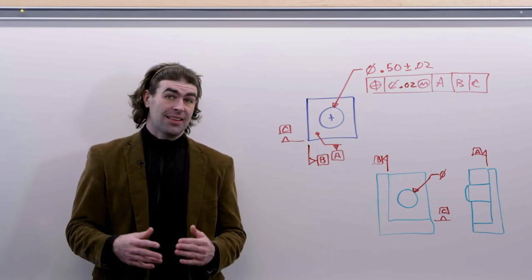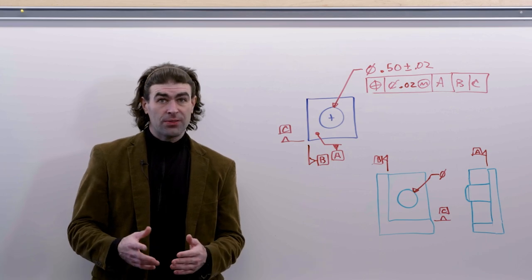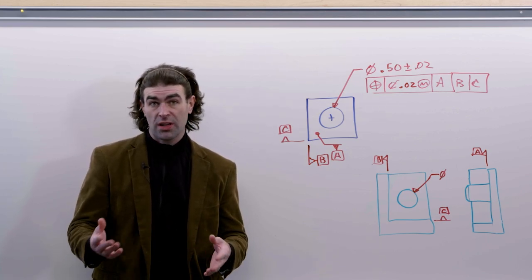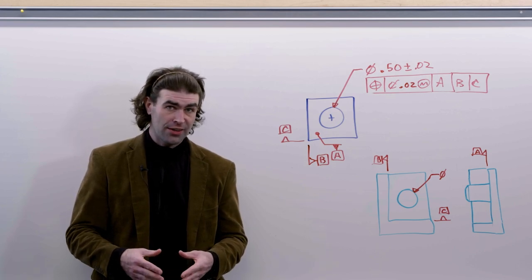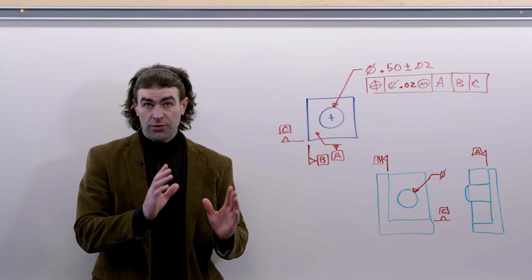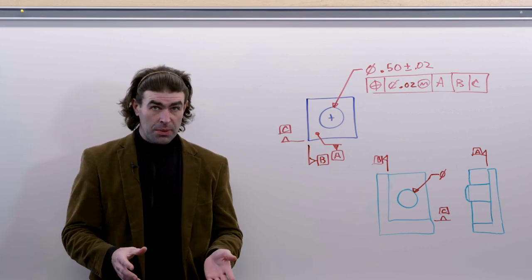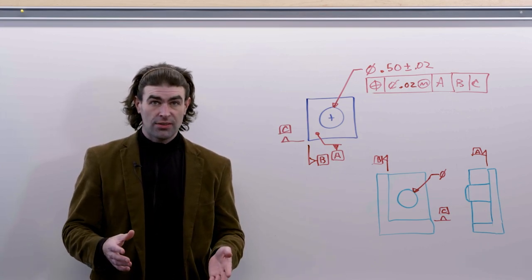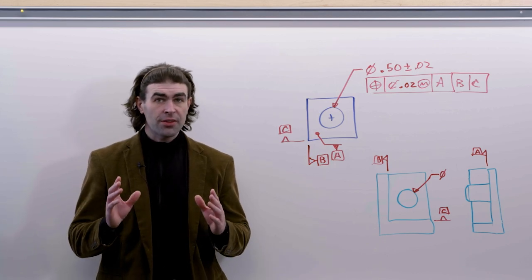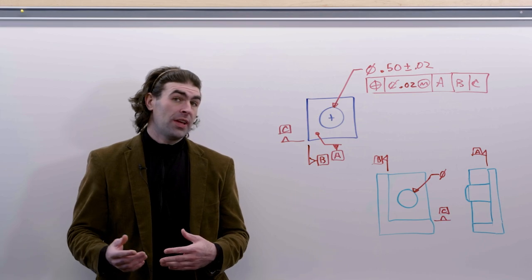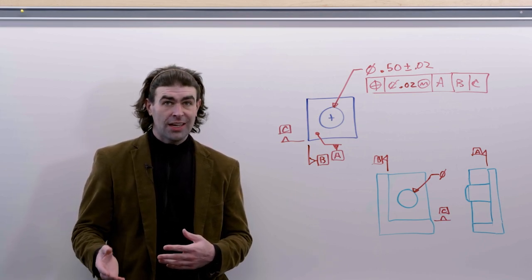Basically what it says in Y14-5 is that there's these two methods to verify a position or orientation applied to a feature of size. You can use the surface method or the axis method, but the surface method takes precedence. The surface method can only be used if you're using the MMC or LMC concept.